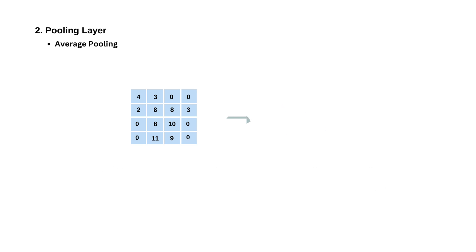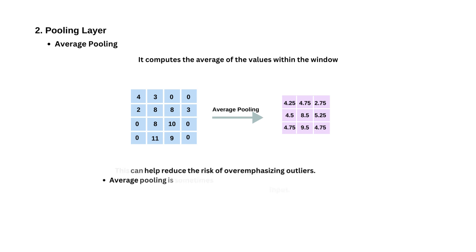Average pooling is similar to max pooling, but instead of selecting the maximum value, it computes the average of the values within the window. This can help reduce the risk of overemphasizing outliers. Average pooling is sometimes preferred in scenarios where we want to reduce sensitivity to small variations in the input. With our understanding of convolutional pooling layers, let's move on to the final piece: fully connected layers.